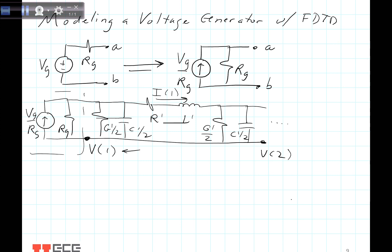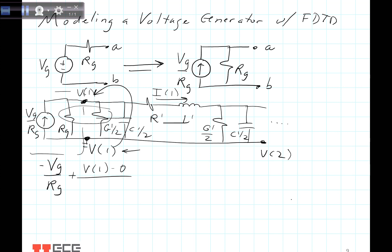Now we write the KCL equations at the node where we model voltage V1. This is actually ground below. Writing the node equivalent currents: first, there's the current source coming in, which is minus Vg over Rg. Then we handle the current going through the two resistors — that is V1 minus ground divided by Rg in parallel with the resistance from the conductance, which I'll call big RG.